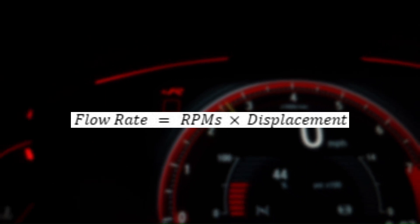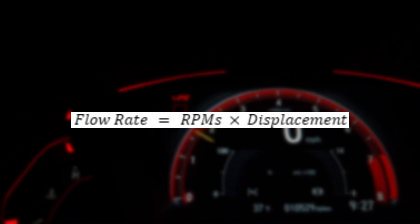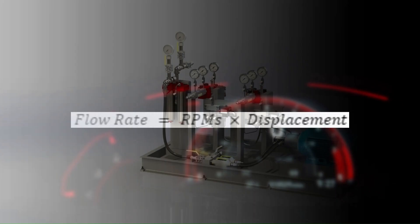To find this out, multiply your operating RPMs by your pump's displacement. This will give you a volume per minute.